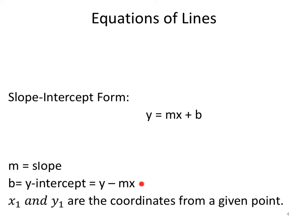There's a formula you can use to find the y-intercept. You can memorize it, or you can just manipulate the equation like we did in 1.9 to solve for b. The x1 and y1 come from if they give us an ordered pair. We'll find out if they do that in this section.